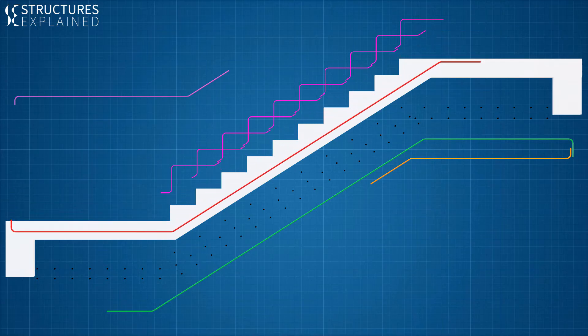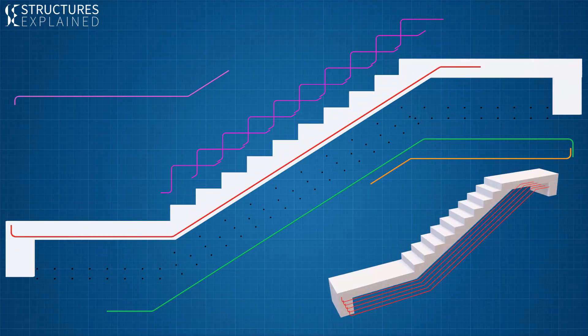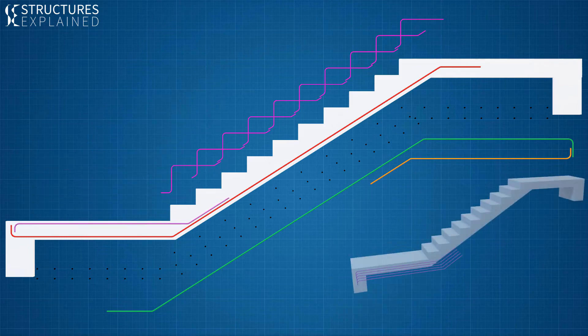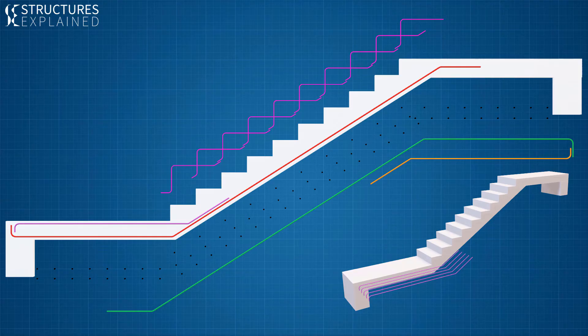Starting with the main longitudinal reinforcement, the first rebar starts from the bottom support, stays at bottom phase for lower landing and waist slab and goes to top phase of upper landing. The second rebar starts from the upper support, stays at the top phase of the lower landing and merges with bottom rebars in the waist slab till one third of the span length.